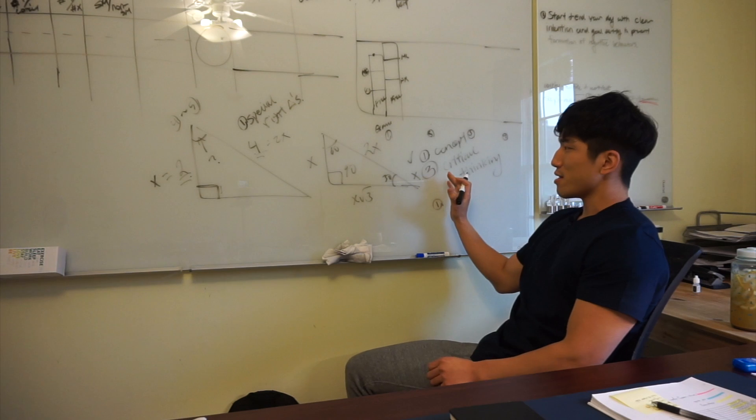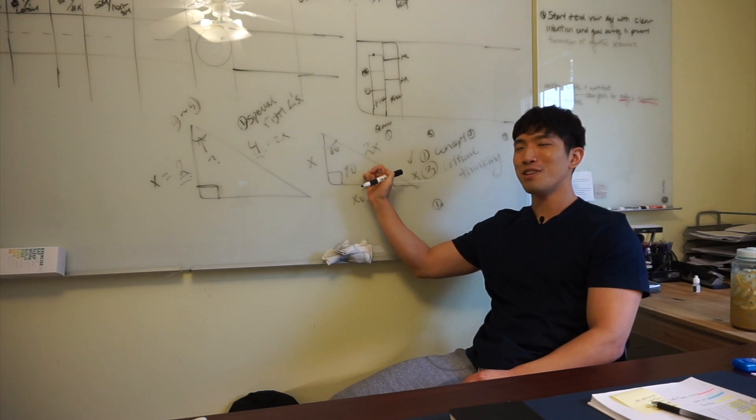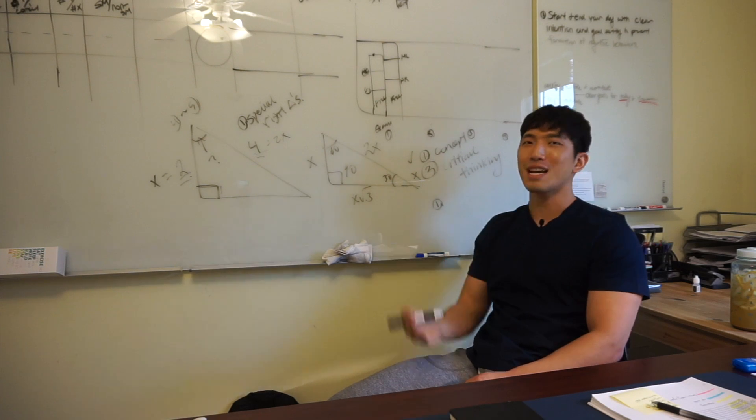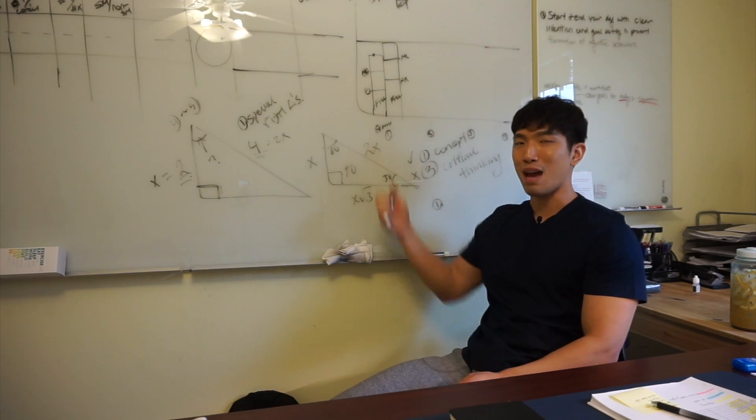So, what that would look like is the person knows the 30-60-90 triangle. It's all in their head. Like, if you ask them, hey, what's the side length ratio and what makes it 30-60-90, they're going to tell you this on the back of their head.